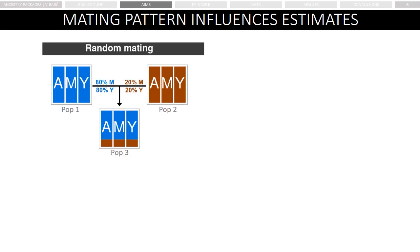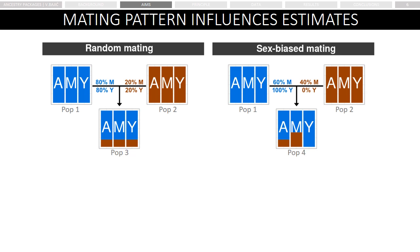Let's imagine two ancestral populations, blue and brown, for which we would have estimates of autosomal ancestry frequencies and frequencies of mitochondrial and Y chromosome haplogroups. If those two populations are randomly mating to create population 3, we expect estimates of all three types of markers to be the same. However, if those two ancestral populations are admixing in a sex-biased pattern — for example, the blue population contributing all of the males into population 4 — we would expect to see discrepancies in estimates when comparing different kinds of markers.